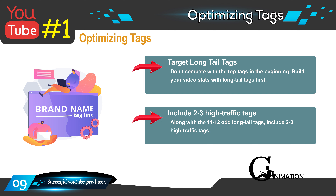This ensures that once your video gathers stats and becomes more valuable, it will start ranking automatically for the high-end tags you are targeting. When you create a video, you don't need to rank for 10 high-value tags — that's nearly impossible if you're not a huge channel. But ranking for even two to three tags is very good and will make your video popular.